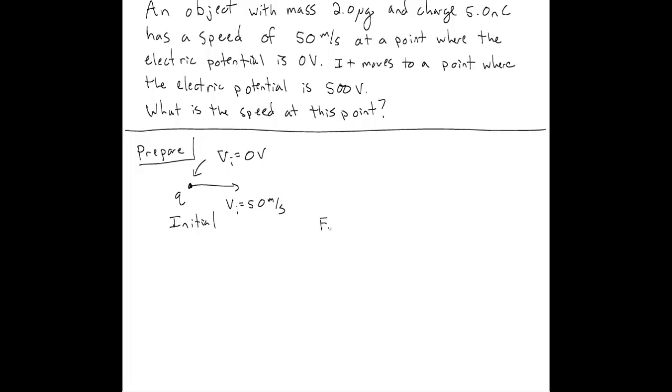The final state has our charge Q moving with some final velocity, which we don't know, and a final potential of 500 volts. That's all we know from the problem statement.